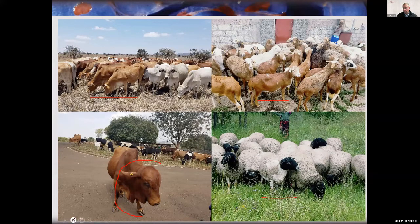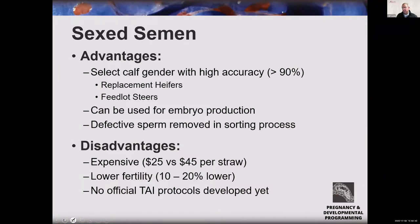One of the primary advantages of utilizing sexed semen is that you can select for a gender of your preference at a fairly high accuracy of greater than 90%. It allows you to generate increased replacement heifers, create more feedlot steers, or create more bulls if that is a market for you. It can be used for embryo production in MOET — multiple ovulation embryo transfer — or in IVF. Additionally, a lot of defective sperm are removed through the sorting process, making sexed semen more morphologically normal than a conventional straw.